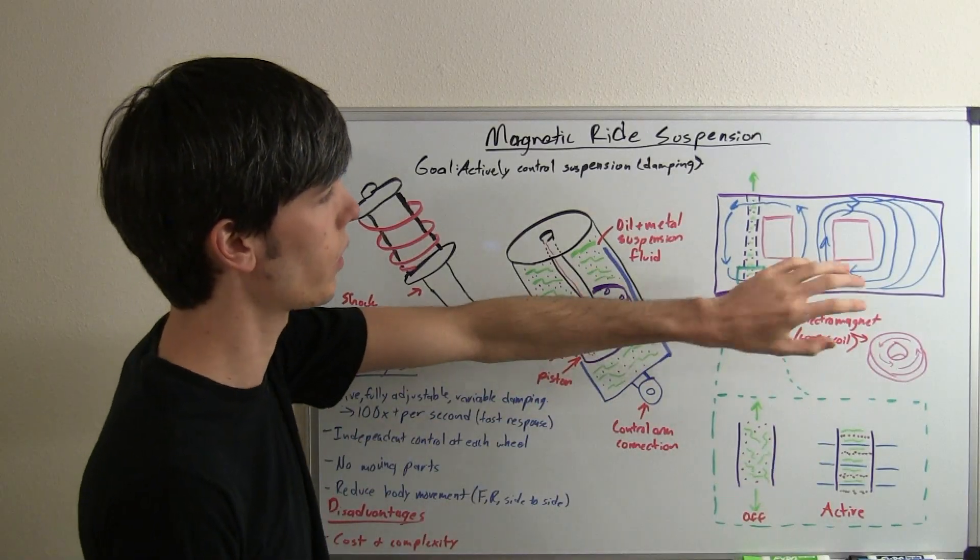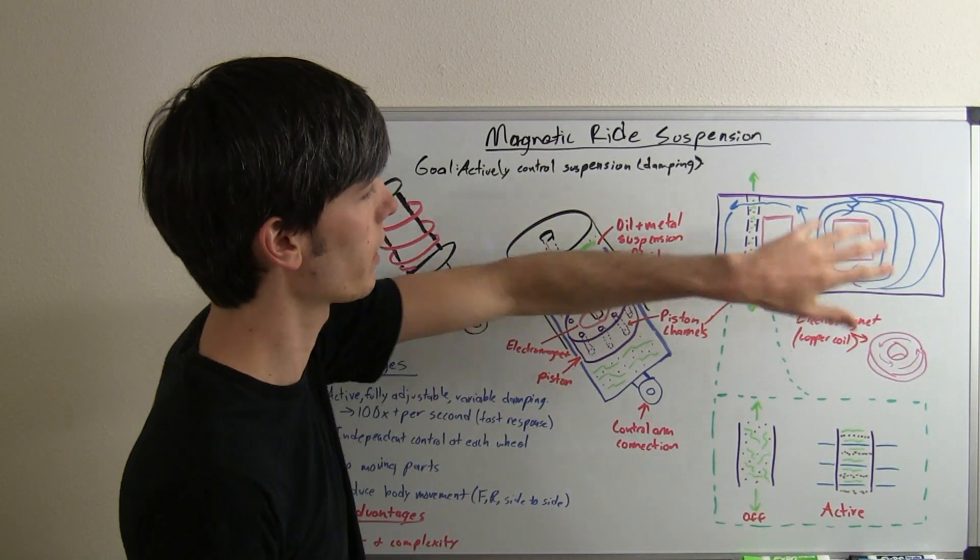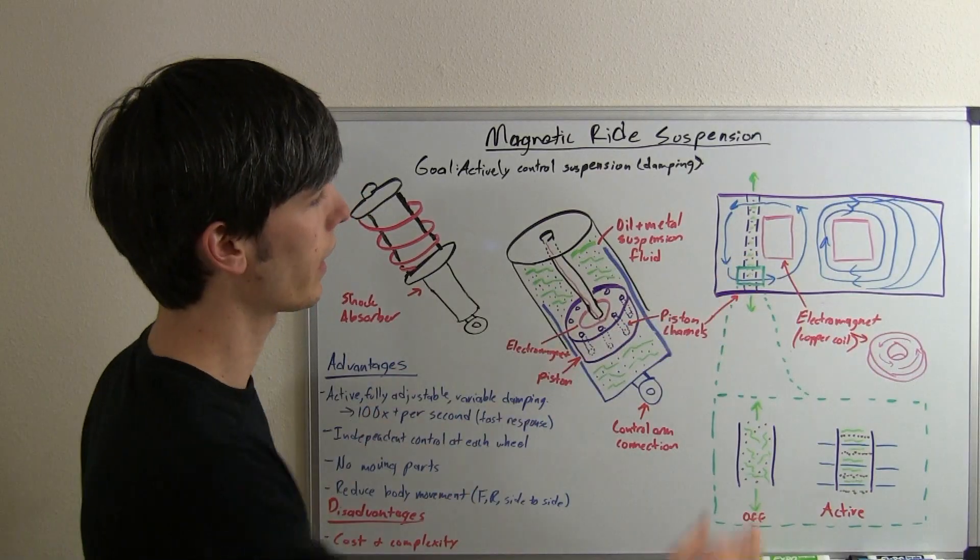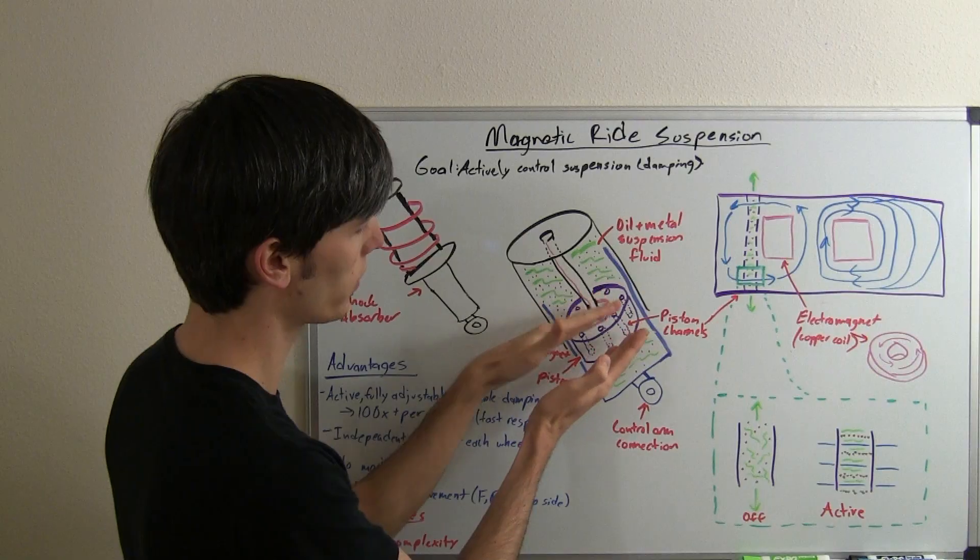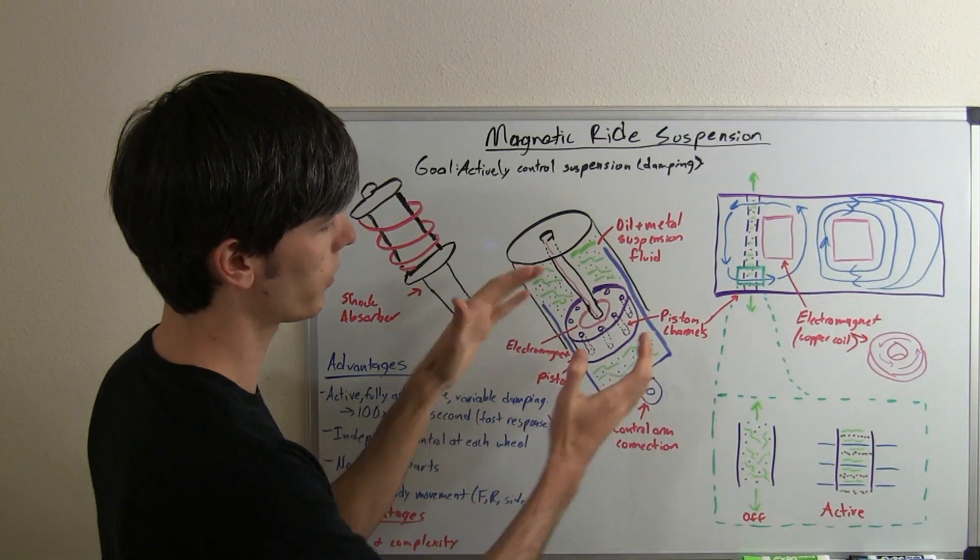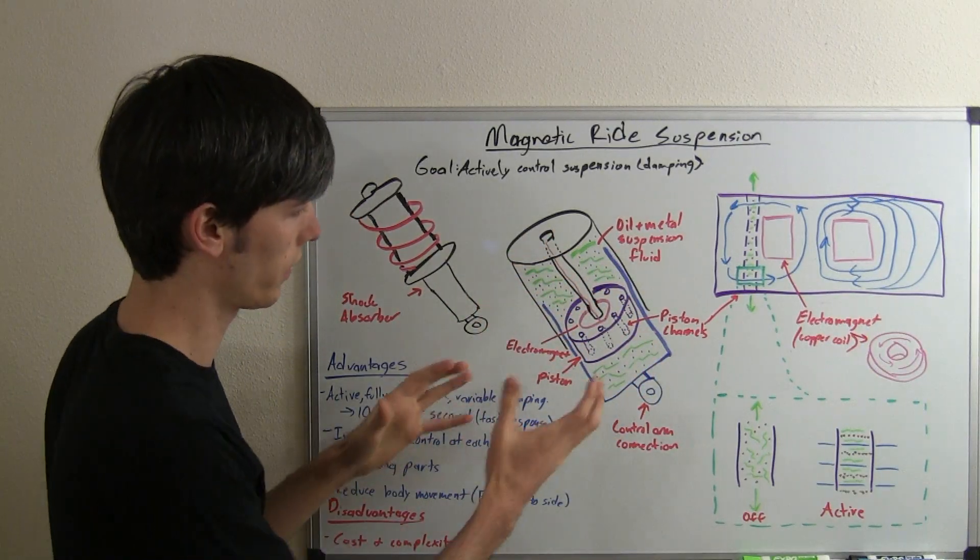All that really happens is you activate this electromagnet by sending a current through it. And what that does is it basically lines up all these little particles that are in here and prevents that piston from moving much. So, it's a real stiff system.